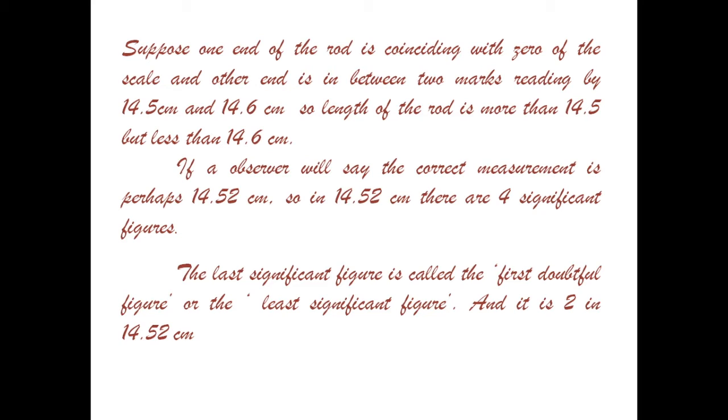The lowest significant figure is called the first doubtful figure or the least significant figure, and it is 2 in 14.52 cm. Why? Because we know the length of the rod is in between 14.5 to 14.6 cm, but we are not sure if it is 14.52 or 14.53 or 14.54.